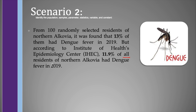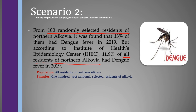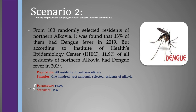It is clear that the population are all the residents of Northern Alcovia, while the sample are the 100 randomly selected residents of Northern Alcovia. Since the population is all the residents of Northern Alcovia with an incidence rate of dengue of 11.9%, then the parameter is 11.9%. And since the samples are the 100 randomly selected residents with an incidence rate of dengue of 13%, then the statistics is 13%. The responses include: the first resident had dengue, the second had dengue, the third had no dengue, and so on, with the incidence rate turning out to be 11.9% from the population and 13% from the samples.